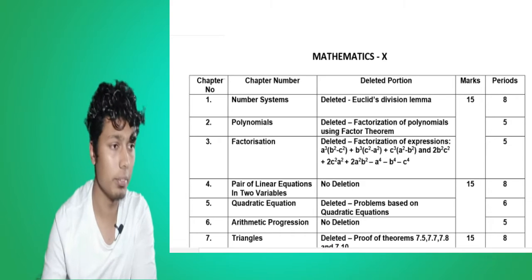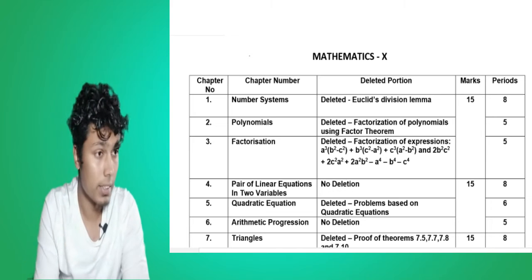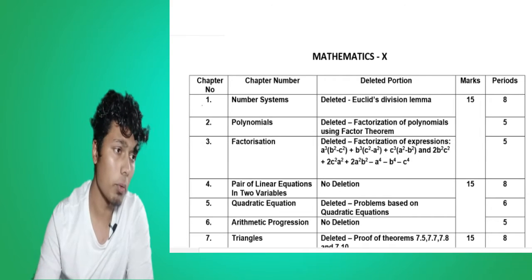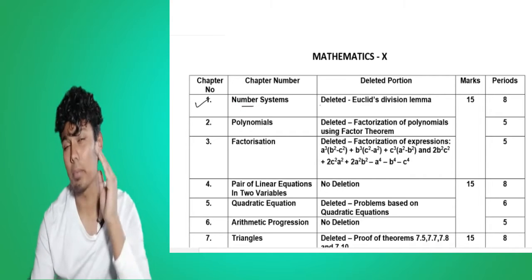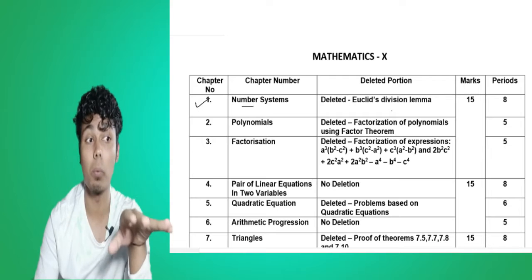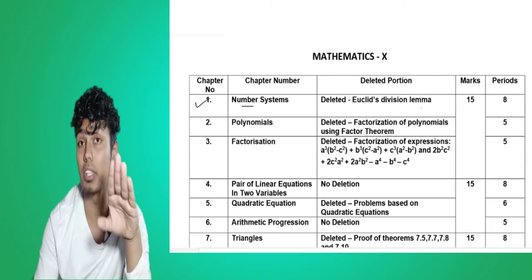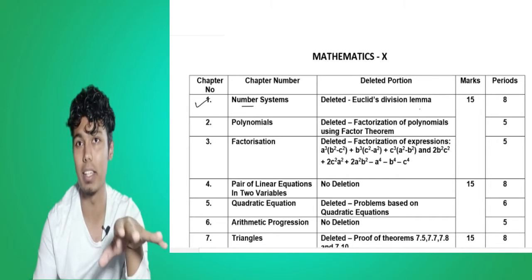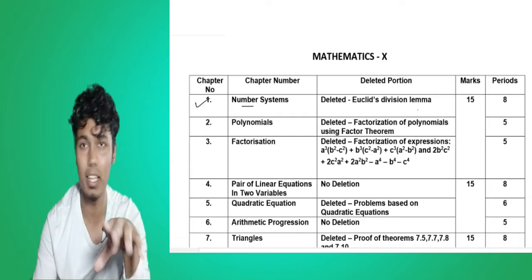Let us see the syllabus here — you can see on the screen the syllabus is given this way. Chapter number one: Number System. From chapter number one, the deleted portion is Euclid's Division Lemma. Any question related to Euclid's Division Lemma is also deleted — not only the statement, but every question related to this topic is deleted.